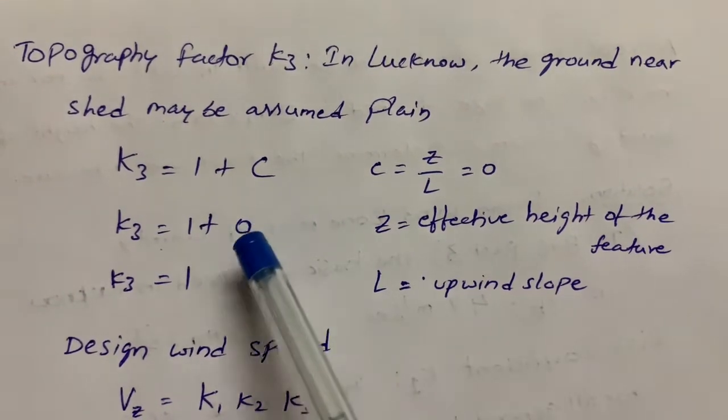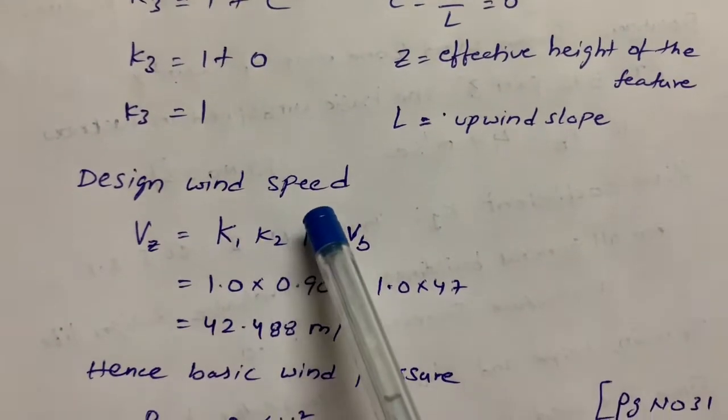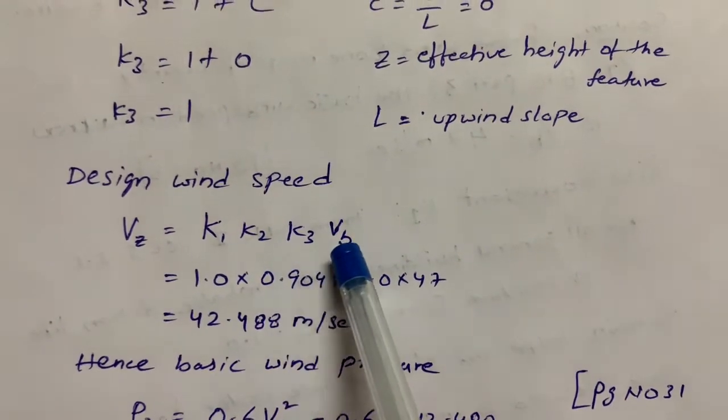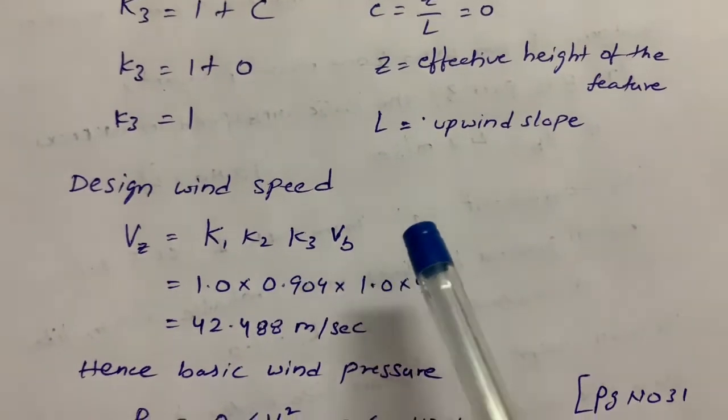Next is design wind speed. Design wind speed formula: Vz = K1 × K2 × K3 × Vb. This formula is available in IS 875. Substituting all the values, I got Vz = 42.488 m/sec.